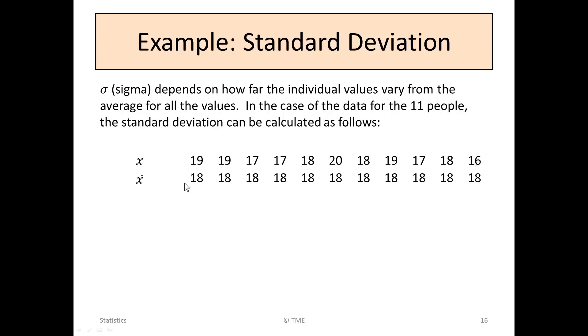The x bar, or the mean, we found to be 18. So every number there is just 18. x minus x bar, taking the average from each of them.